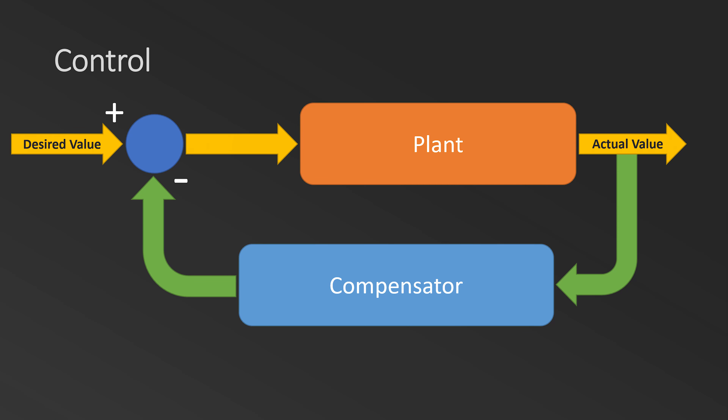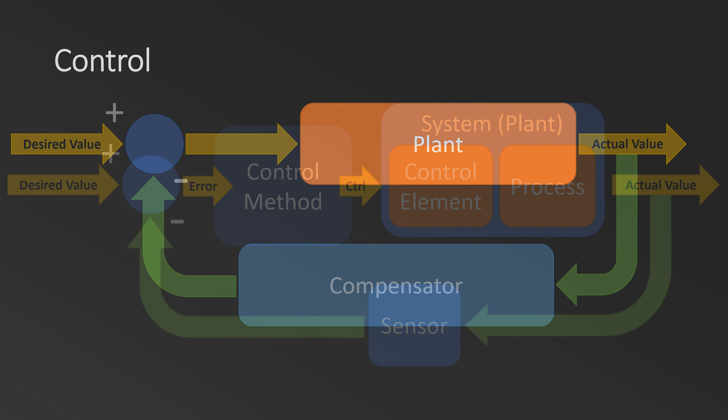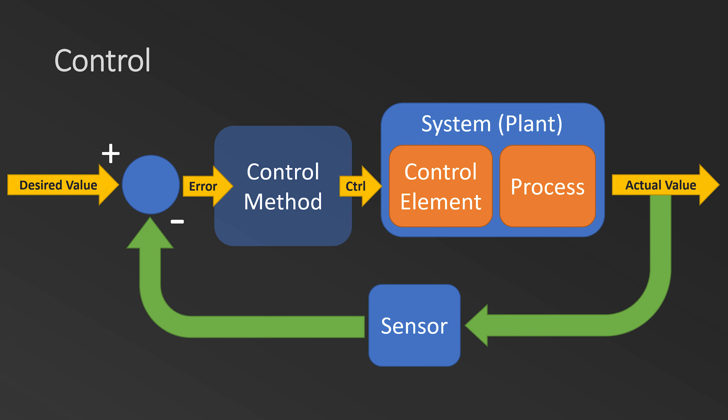Closed-loop control is awesome. It abstracts the control process, so we don't need to worry so much about all the details of controlling. All we need to worry about is implementing a sensor that can accurately measure the thing that we want to control, and then ensure that the control system is stable when you combine the compensator and the plant. The plant is one key part of a control system, and this is a mathematical representation of the output stage and the system being controlled put together. For electromechanical systems, deriving the plant can get a little messy since we'll need to mash the electrical and mechanical engineering equations together.